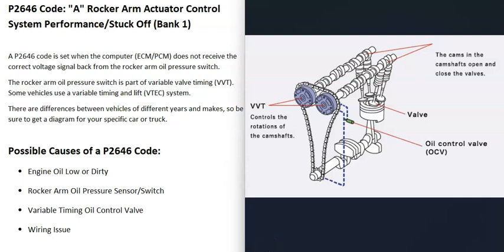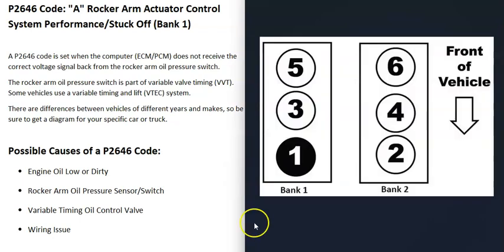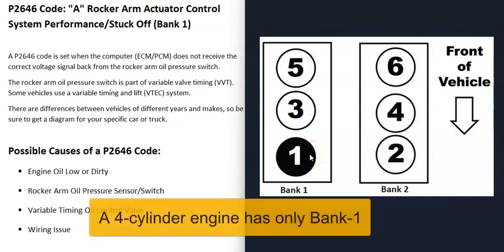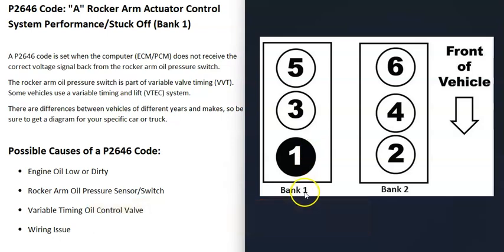Note that there can be differences depending on the vehicle, the year, and other factors, so be sure to get a diagram for your specific vehicle. If you have a V6 or V8 engine, you're going to have two banks. Bank one is always on the side of the engine with the number one cylinder, and the opposite side is bank two.